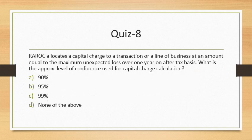Question 8: RAROC allocates a capital charge to a transaction or line of business equal to the maximum unexpected loss over one year on an after-tax basis. What is the approximate confidence level used for this capital charge calculation? The answer is 99%.